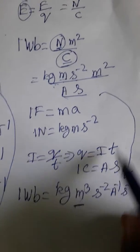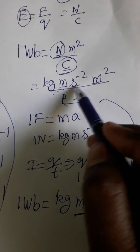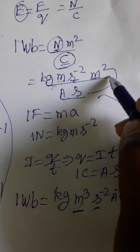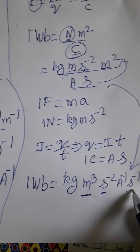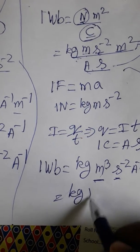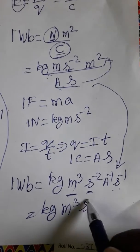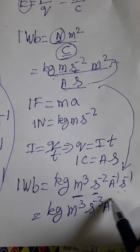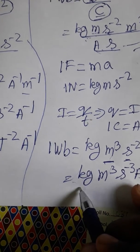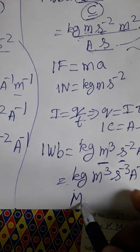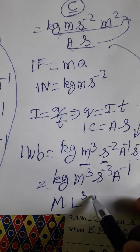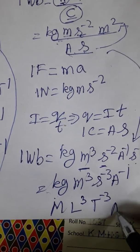So the final dimension formula is: M for mass, L³ for length cubed, T⁻³ for time, and A⁻¹ for ampere inverse.